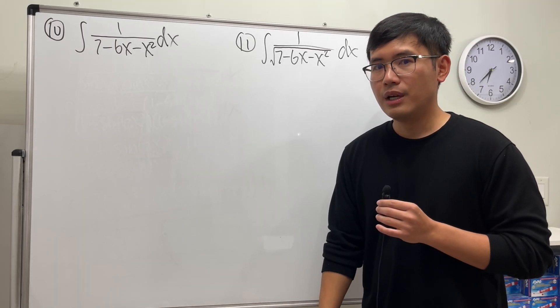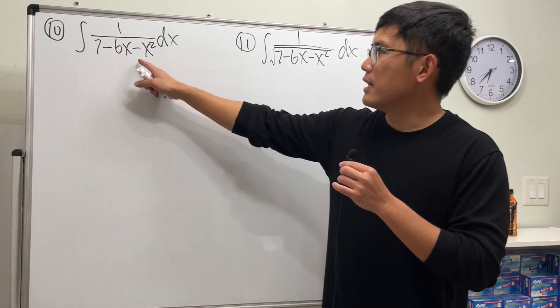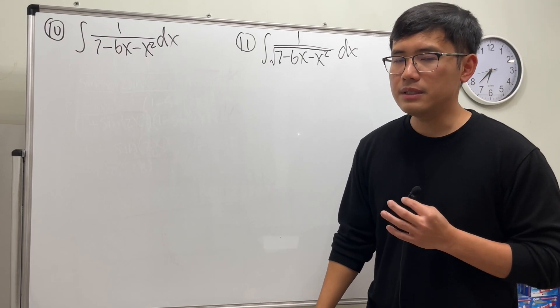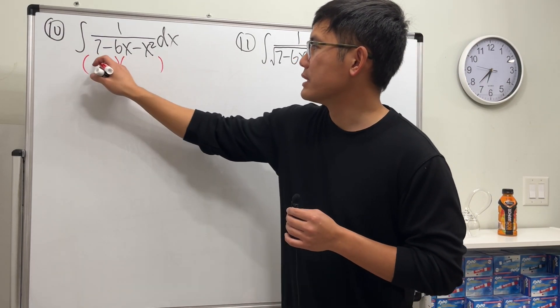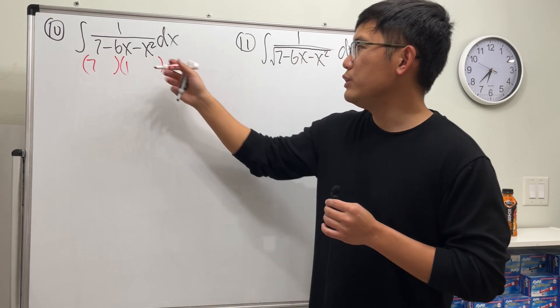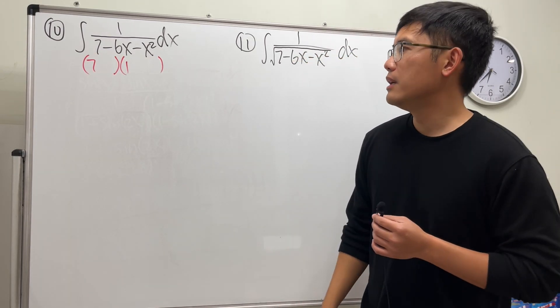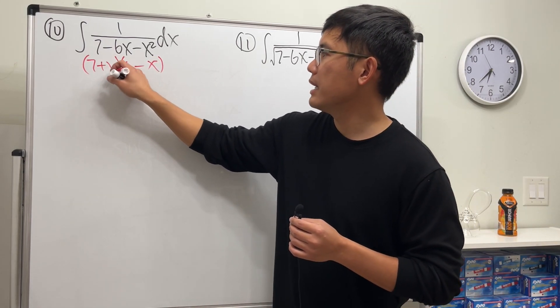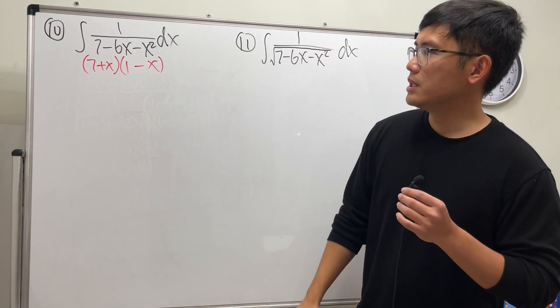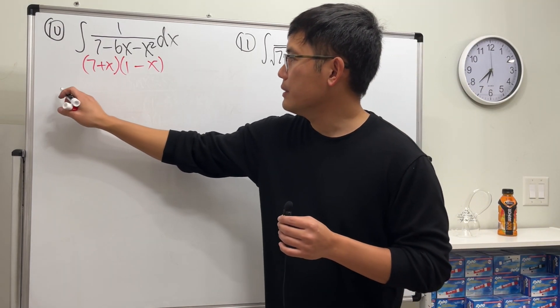Let's work on this one first. Notice 7 minus 6x minus x squared can be factored, so let's go ahead and factor it. When we do that, we will end up with 7 and 1, and we need to have a minus x times x. The correct combination is minus x here, plus x here.